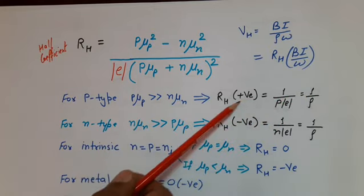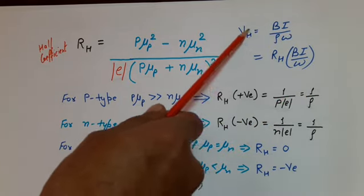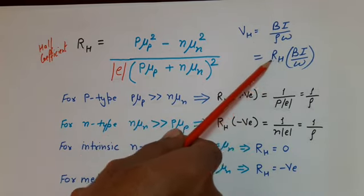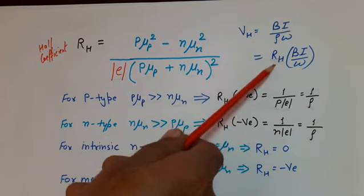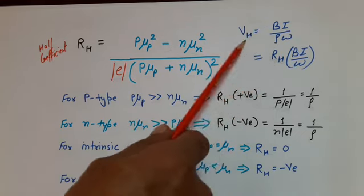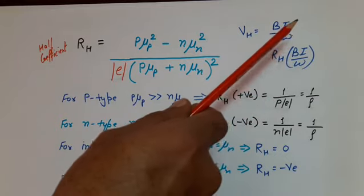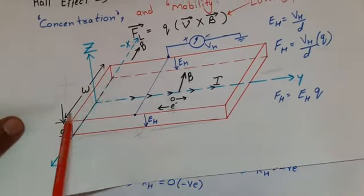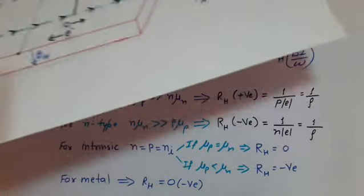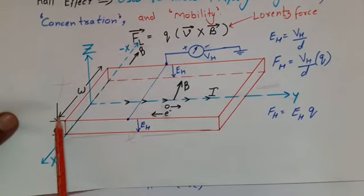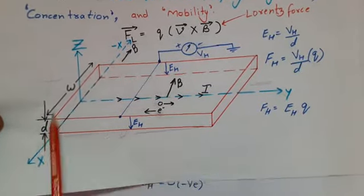We can now write the Hall voltage expression as VH = RH · B·I / W, where RH is the Hall coefficient. Note that in the denominator, the side length along which the magnetic field is applied appears. In our case, magnetic field was applied along the width W, so W appears here. If we had applied the magnetic field along the depth D, then D would appear instead.